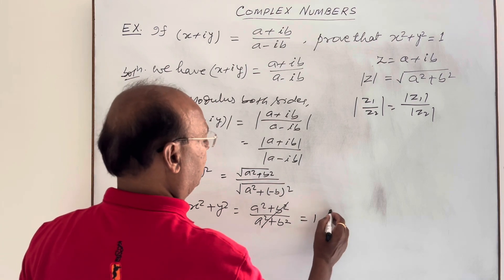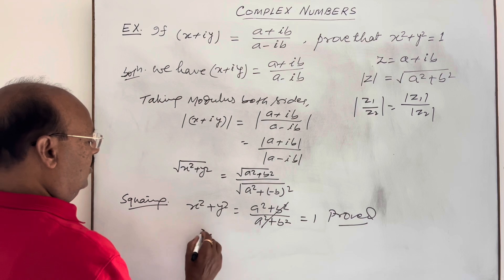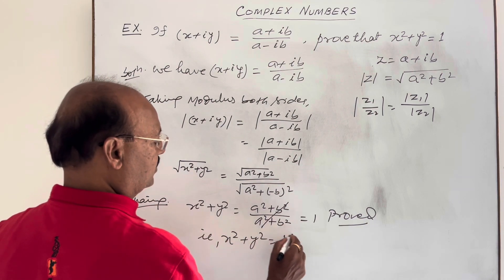So this is equal to 1. Hence we have proved this result, that is we are getting here x square plus y square is equal to 1, proved.